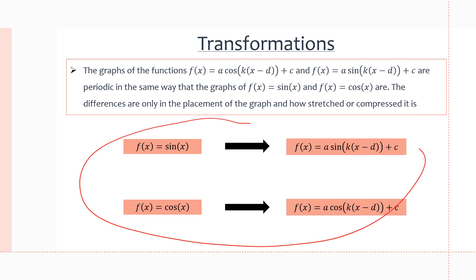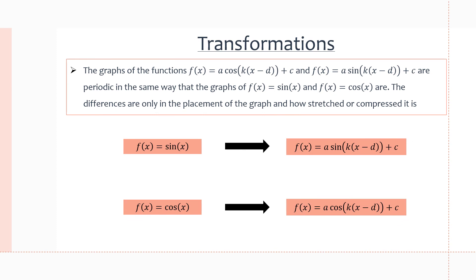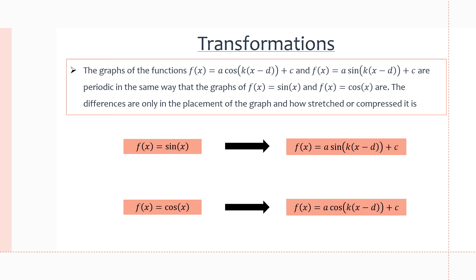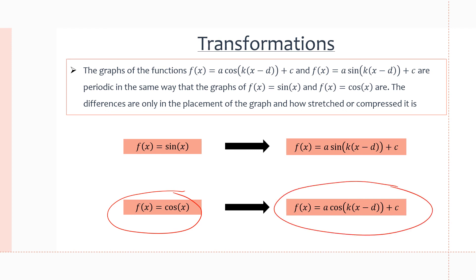We always start with f(x) = sin(x) and transform it, where we choose a value for a, for k, for d, and for c, and it transforms the graph in some way. Same thing with cosine — we start with f(x) = cos(x), place our transformation on it, and then we get another graph.